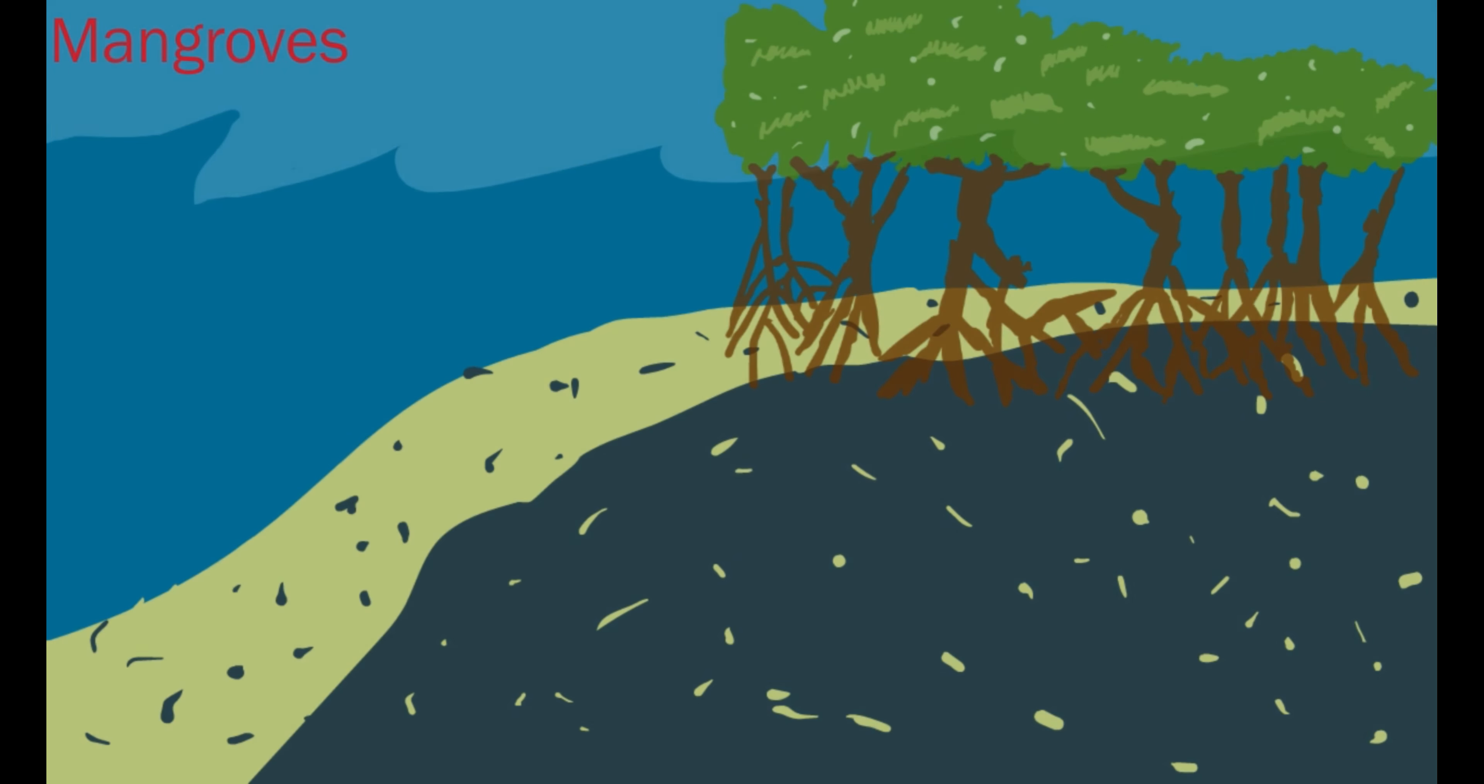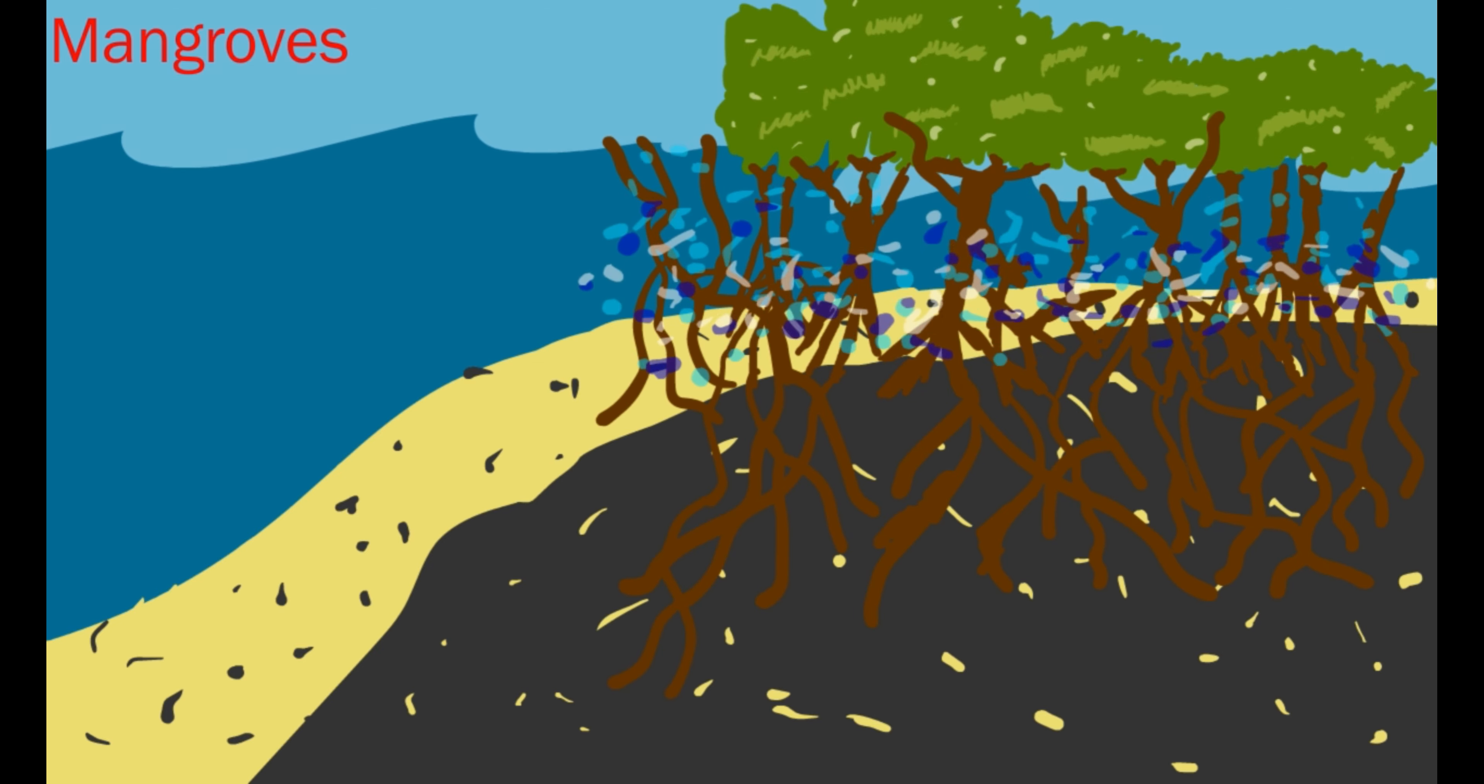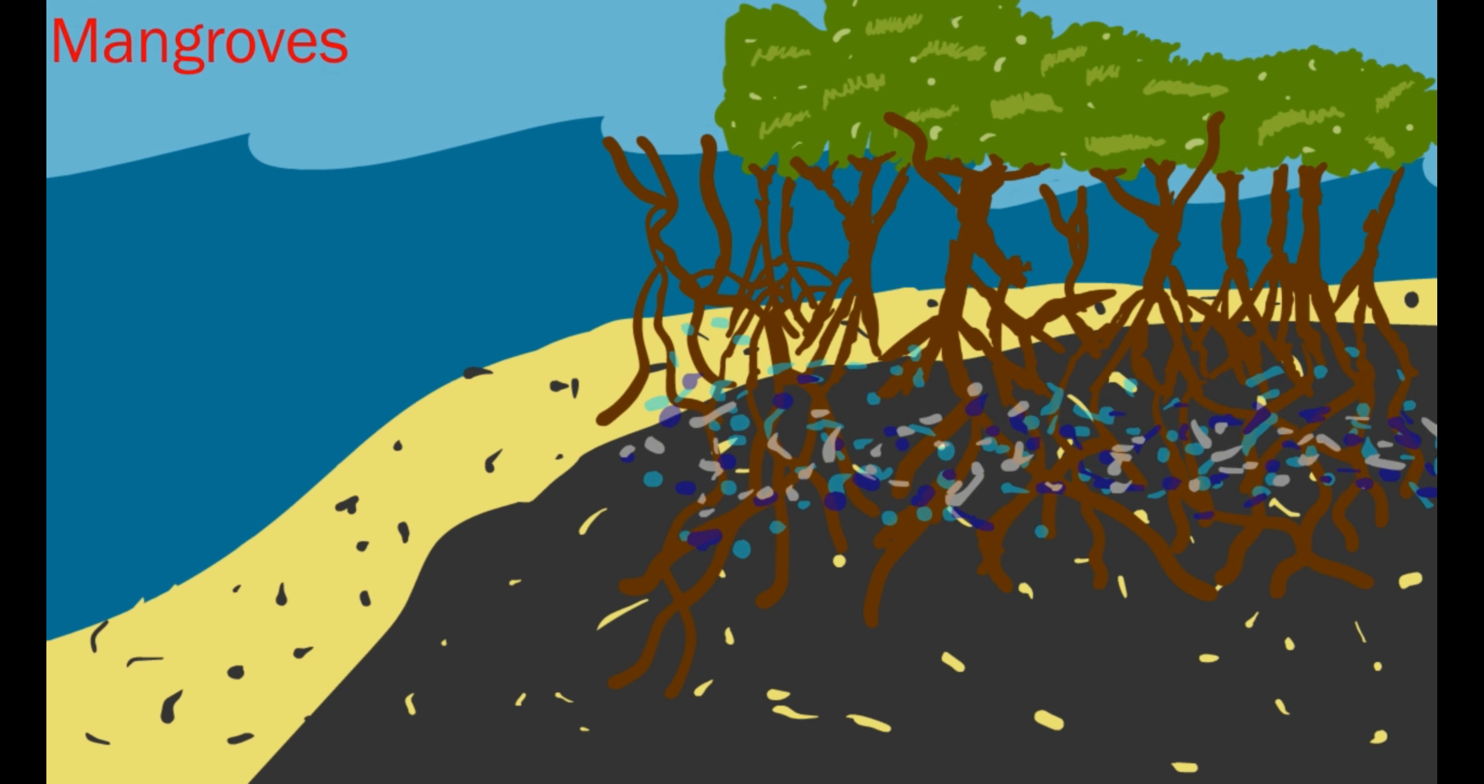Plants can be ecosystem engineers too. Mangroves call the shallower parts of the bay home, but they help create more habitat for organisms at the bottom. Mangrove roots spread far out and are shaped like tubes, bringing oxygen below the surface.